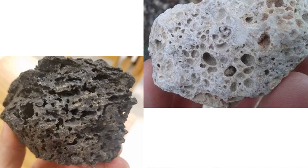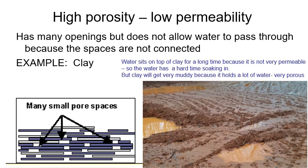Here are some natural materials with high porosity — rocks with lots of open spaces and holes that are also pretty permeable, so water can get in very easily. Something that has high porosity but low permeability is clay. Clay can hold a lot of water and has many open spaces, but they're not well connected, so water has a hard time moving into clay. You know this from living in the South where clay soil stays muddy for a long time after rain — the water sits on top because it has a hard time moving through clay.